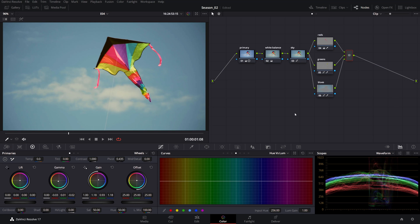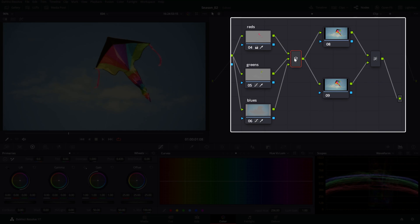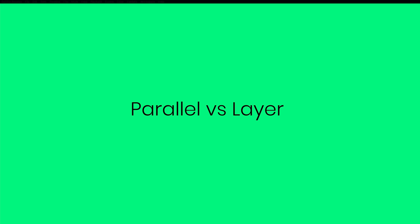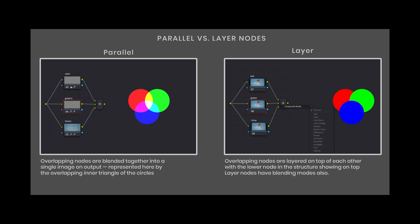Another node structure similar to the parallel node is the layer node structure. Right-click a serial node and choose Add Layer Node. The layer node looks the same except the icons differ. The layer node structure is similar to the parallel one, with the difference that nodes act more like individual layers, much like in Photoshop, instead of blending together. Note that the order of nodes feeding the layer mixer is reversed — the top node will be at the bottom of the stack.